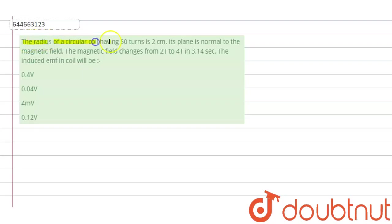The radius of a circular coil having 50 turns is 2 centimeter. Its plane is normal to the magnetic field. The magnetic field changes from 2 tesla to 4 tesla in 3.14 second. The induced EMF in the coil will be...